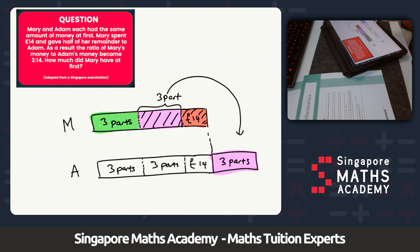Altogether, that means Adam had 14 parts. All of this represents 14 parts.